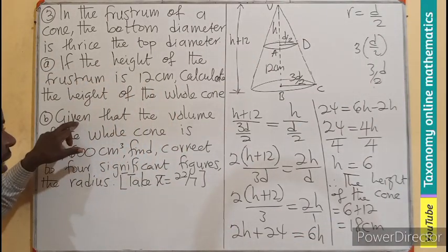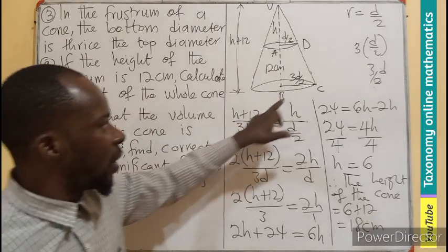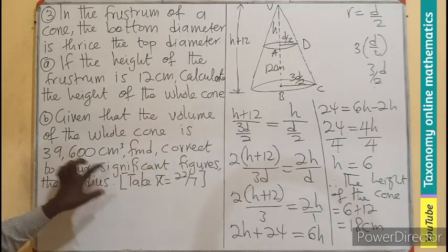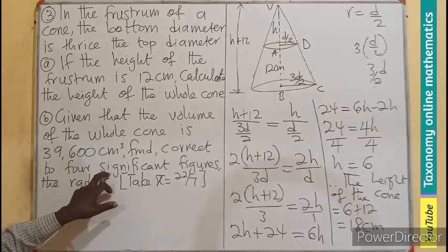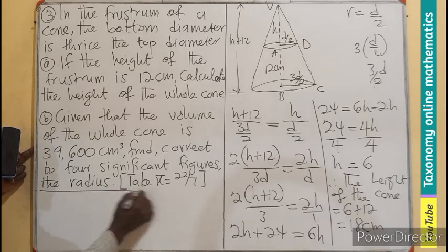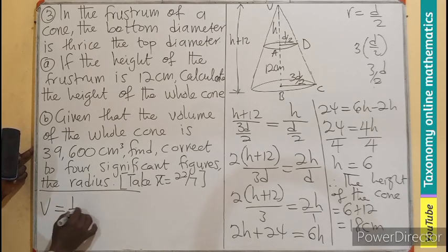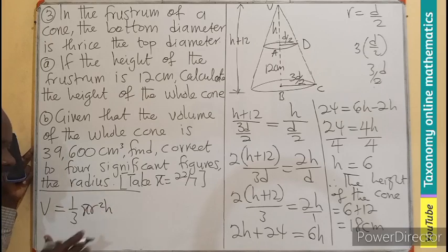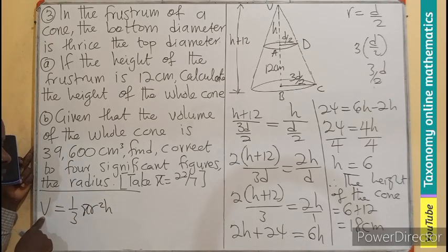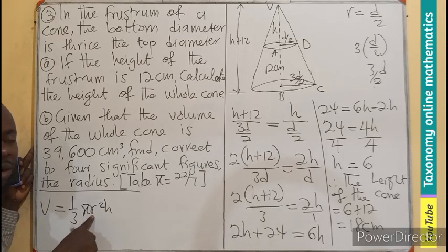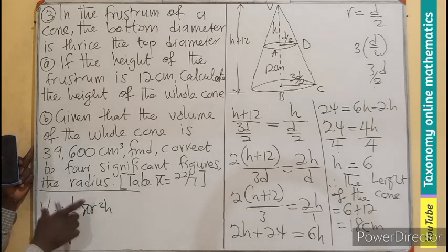The next thing is to find the radius. Given that the volume of the whole cone is given to us, find correct to 4 significant figures the radius. We recall that volume of a cone is 1 third times the base area, which is pi r squared, times the height. We know the volume, pi is given, the height is known. The only unknown variable here is the radius.